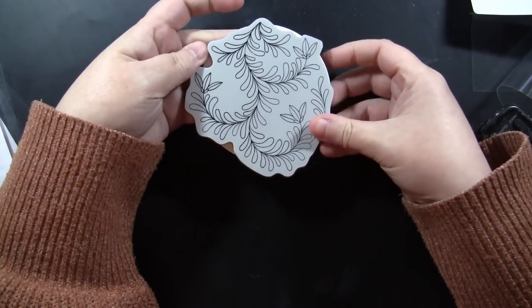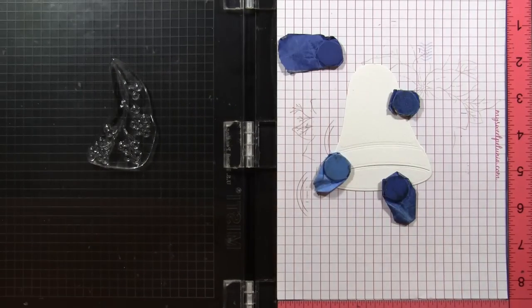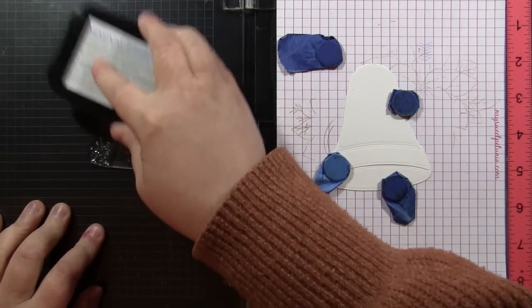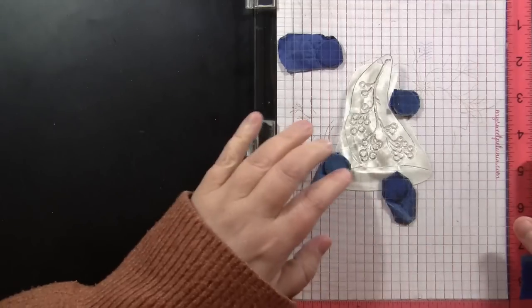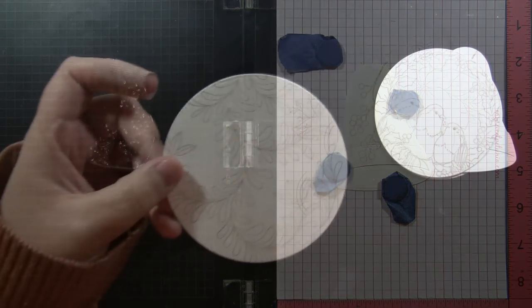And this Penny Black stamp, this is called Chiri, and this fits perfectly on the ornaments. So if you love this idea of the ornament design, that one is designed to fit perfectly on the Penny Black die cut.